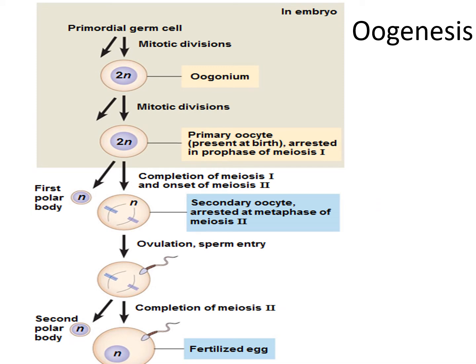Next, we come to the process of oogenesis, which is the production of an egg cell occurring in the ovaries. Unlike spermatogenesis, the process of oogenesis starts while a female is at her embryonic stage — that is when it begins. It then stops when she is born, meaning a female is born with all the eggs she will have in her lifetime. At puberty the process continues, because ovulation and menstruation start at puberty, and these two concepts are related to the release of an egg.